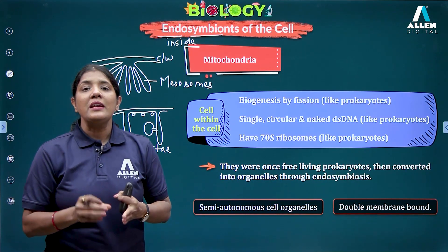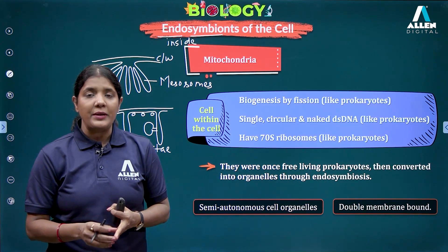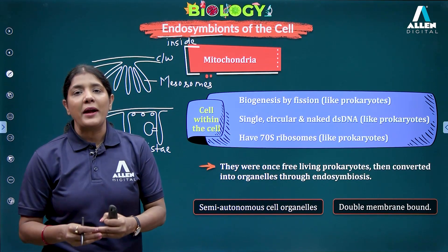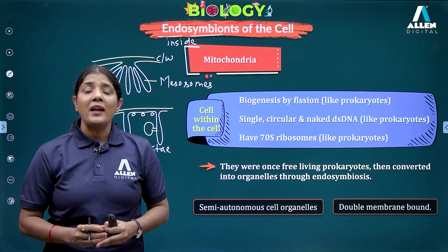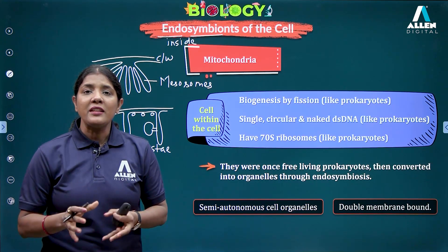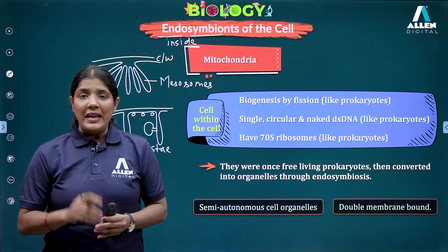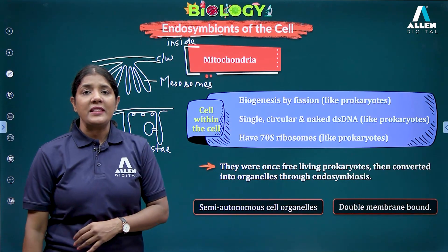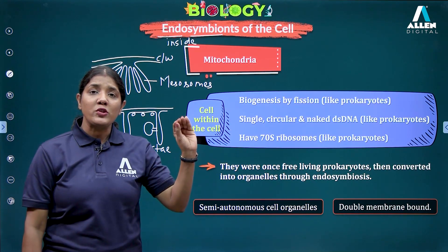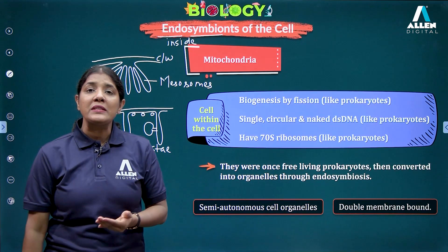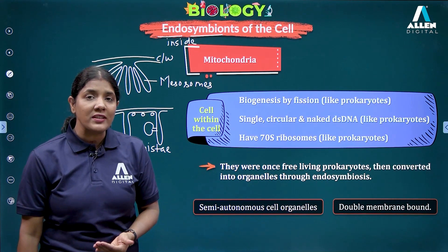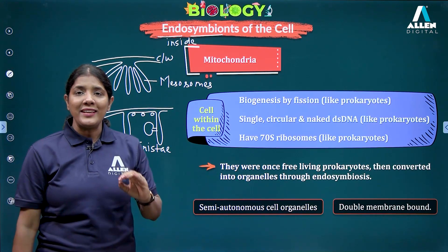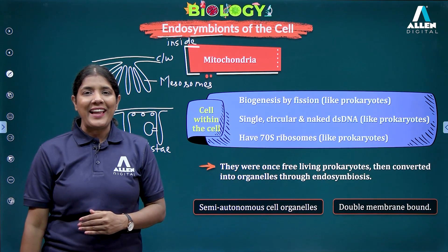Quick review: The site of the electron transport chain is the inner membrane of mitochondria. The site of Krebs cycle is the matrix of mitochondria. The enzymes of Krebs cycle are located in the mitochondrial matrix, except succinate dehydrogenase, which is present in the inner membrane. The inner membrane infoldings — cristae — are analogous to the mesosomes of prokaryotic cells.